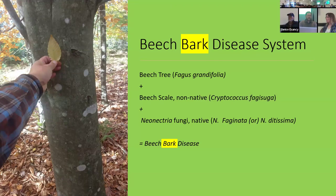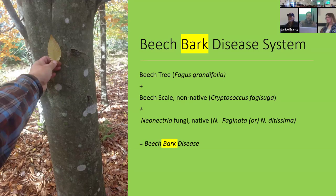Another important part of this story is another unfortunate disease for beech — beech bark disease — which we've had in Maine for a very long time. The beech bark disease system is a combination of a non-native beech scale and one or two of our native Neonectria fungi. The scale predisposes the beech tree to beech bark disease. Together they create trees with numerous cankers and a lot of callous tissue that prevents water and nutrients from going up to the crown.